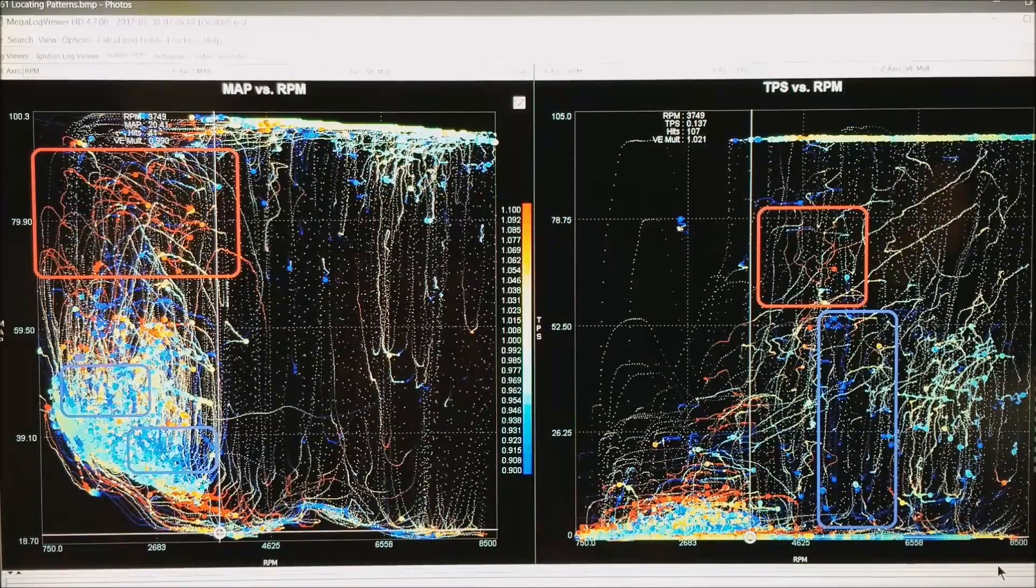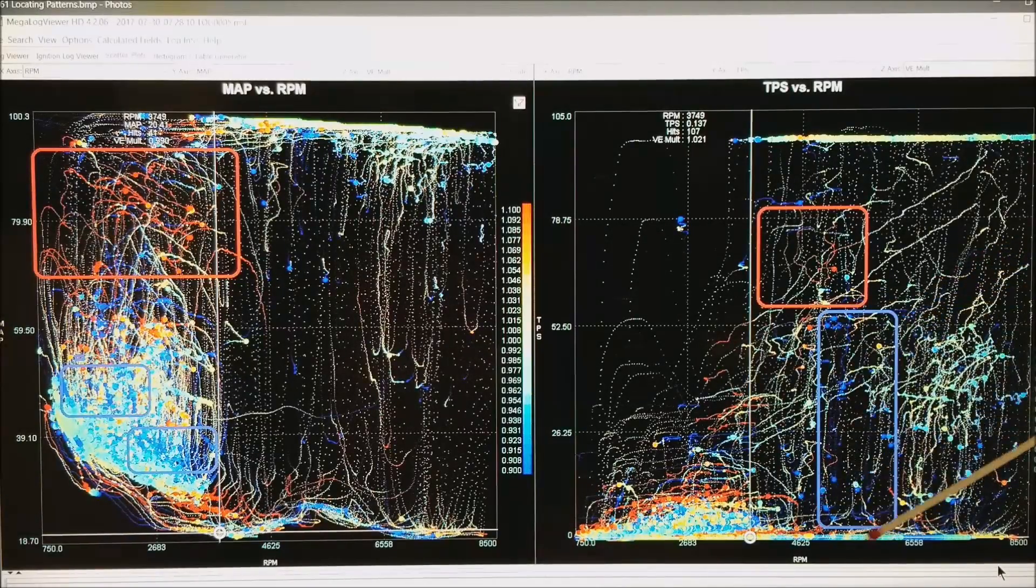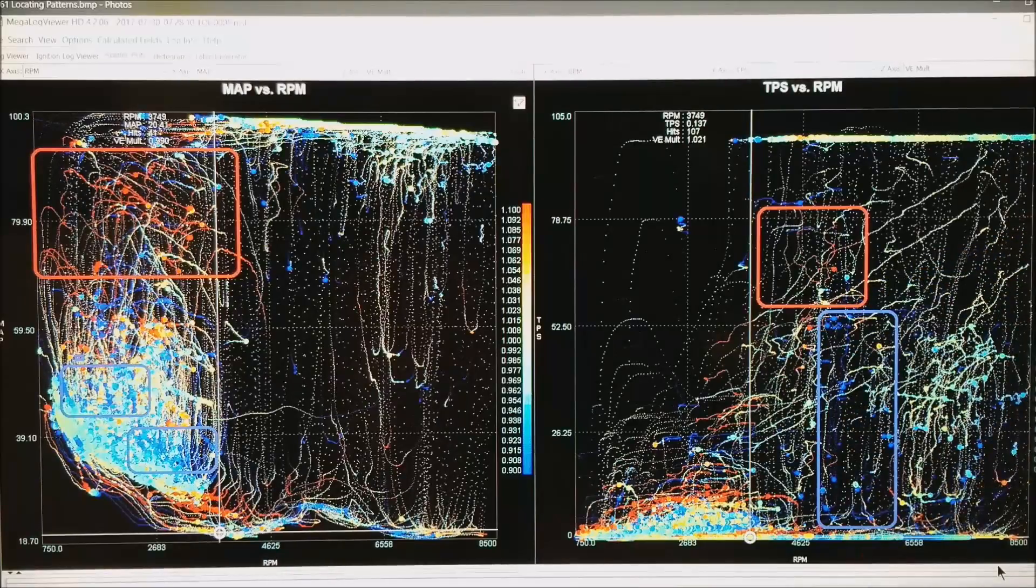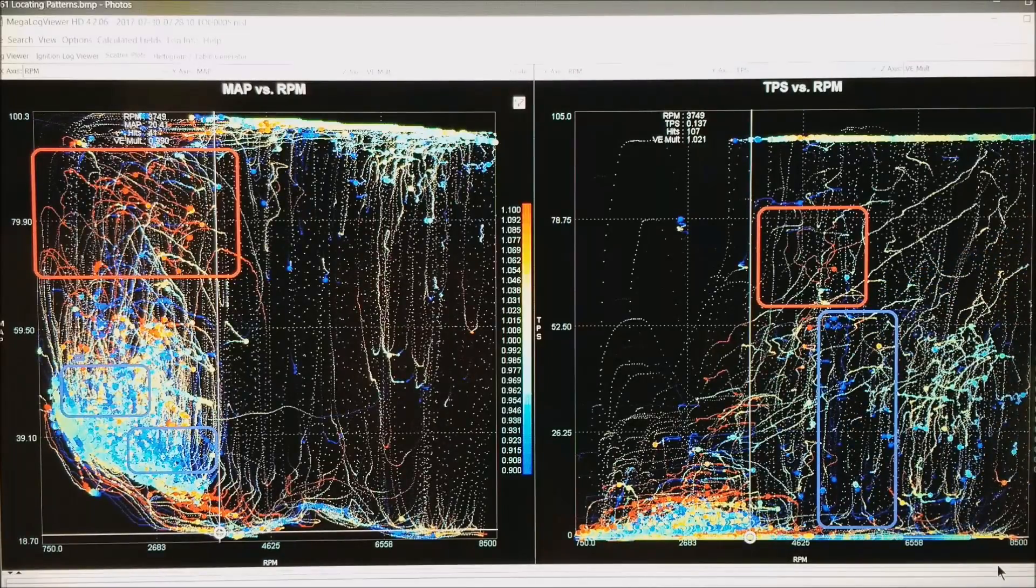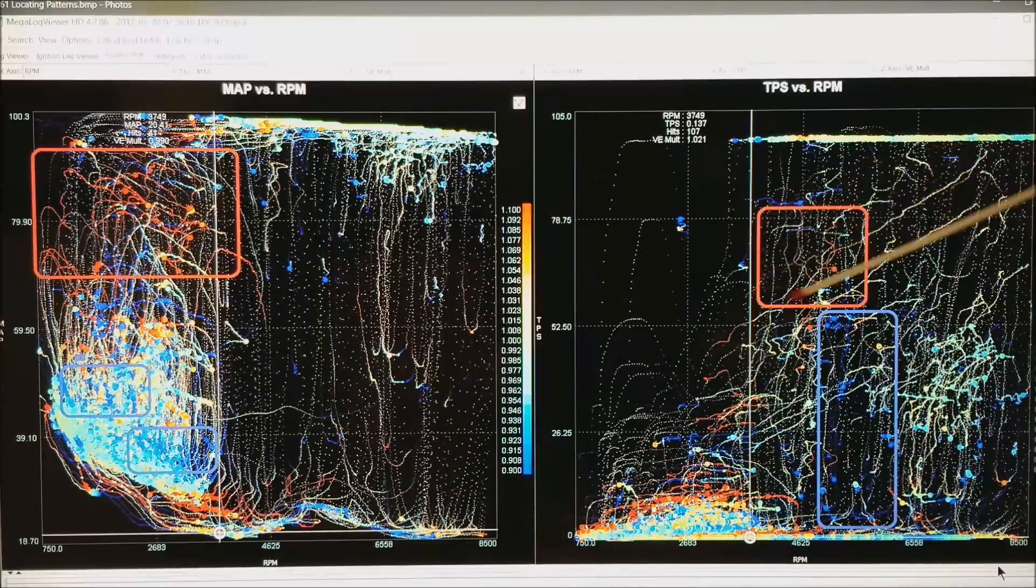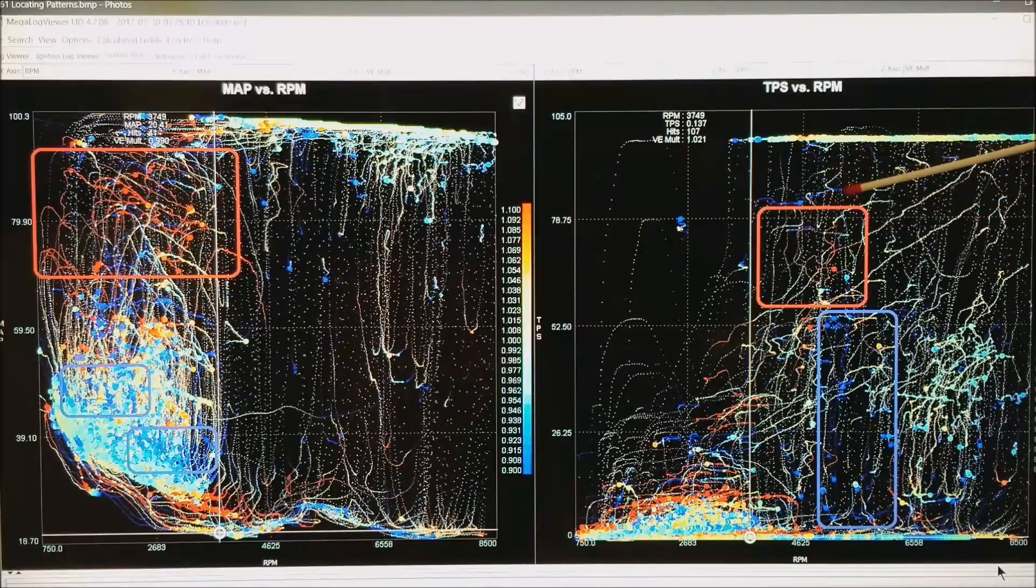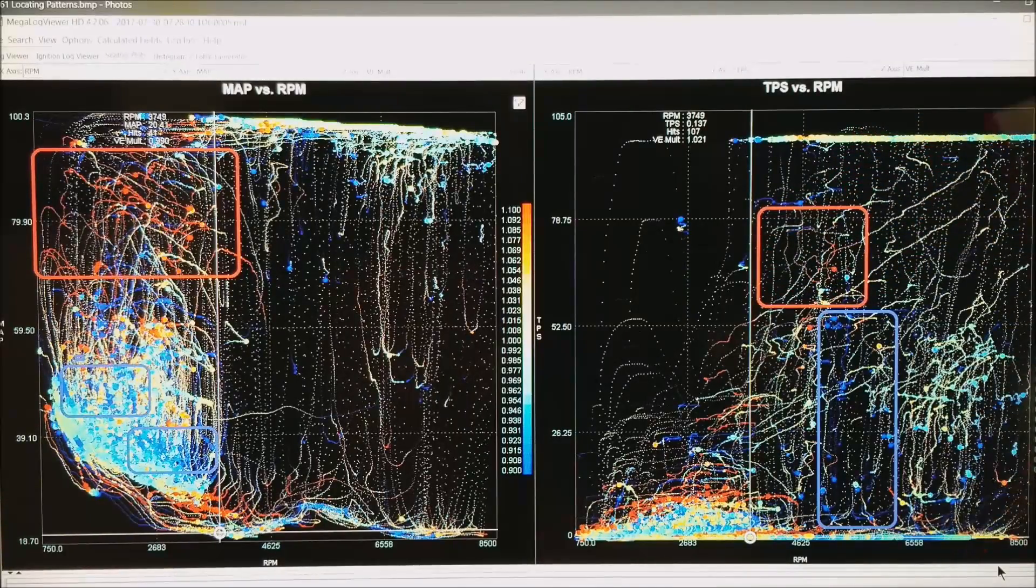And on the Alpha N table, what we will do is, here is a blue area. Meaning we need to multiply the VEs by about 0.9. And we want to add some fuel right here. We are not too bad in almost all of this area. We will leave it alone.